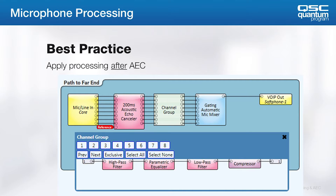In many cases, we'd like to process the incoming microphone signals to maximize intelligibility and make them sound as good as possible. As a best practice, we'd like to apply that processing after the AEC block in the signal chain. We'd like the AEC to operate on the signal before any processing, especially any processing that is non-linear in nature such as compression.